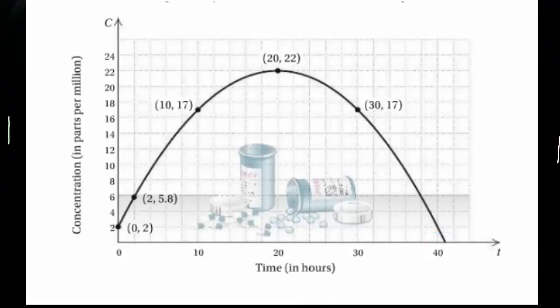So using that graph only, don't go back to the formula. Determine the approximate value of the polynomial when t is 3 and t is 26. So 3 hours after you take the initial antibiotic and 26 hours after you take the initial antibiotic. What are we looking at?